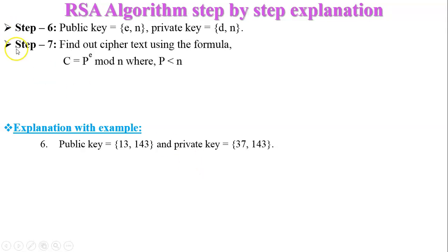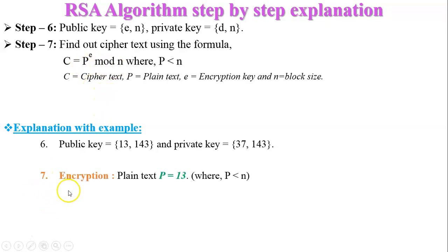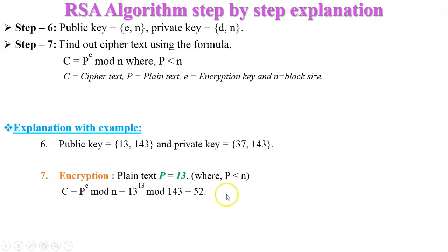Step number seven: find the ciphertext using the formula C equals P raised to e mod n, where P is less than n. Here e is the encryption key and n is the block size. With plaintext P equal to 13, and since 13 is less than 143, we compute the ciphertext and get C equal to 52.